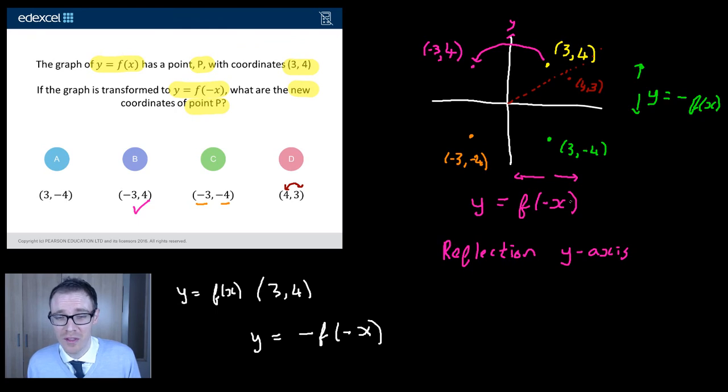Where's (3, 4) going to go there? And I wonder, there's two types of reflection going on there. Does it matter if you do the one inside the brackets first, followed by the one outside the bracket? Or if you do the one outside the bracket first, followed by the one inside the bracket? Have a little mess around with that. It will really help improve your understanding of reflections.